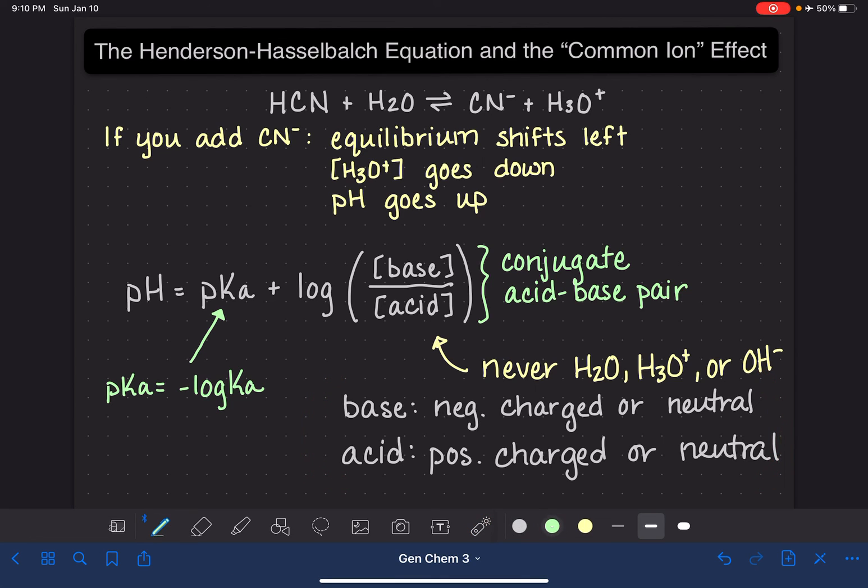So first of all, let's go through the steps again. Number one, your acid and your base could never be water or H3O+ or OH-. So you're going to find your balanced equation and you're going to cross those guys off because they cannot be your acid or your base. Then you're going to look at what you have left.